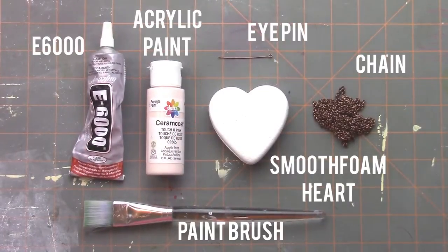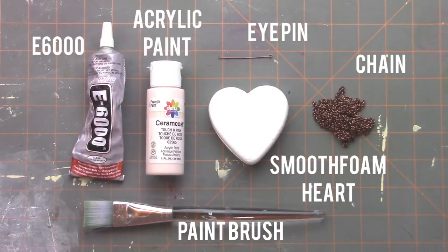Jennifer Priest here today to share with you how to make this fun Conversation Heart Necklace. You're going to need some E6000, a paintbrush, and some pale acrylic paint.